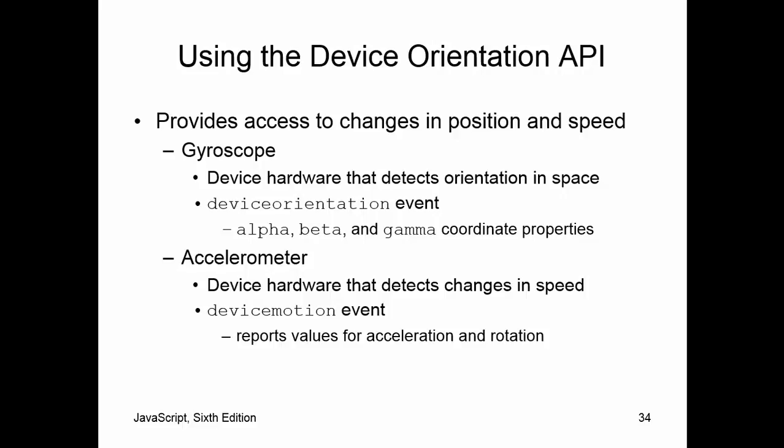Next is the Device Orientation API, which provides access to changes in position and speed. It uses the gyroscope — which detects orientation in space — and the accelerometer, which detects changes in speed. The API lets your apps react to changes in data provided by the hardware. For example, if someone is using a mobile app in portrait mode and switches to landscape mode, the way that's handled differs depending on the device.